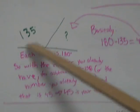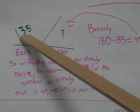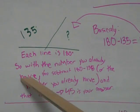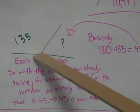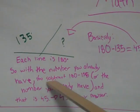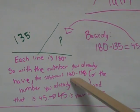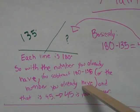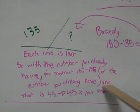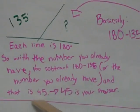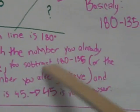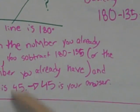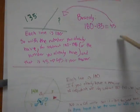So we already have 135. Each line is 180. So with the number you already have, which is 135, like I told you, you subtract 180 minus 135, or the number you already have, and that is 45. 180 minus 135 is 45. 45 is your answer for problem 1.